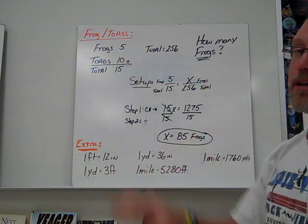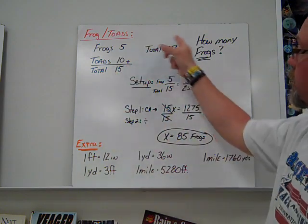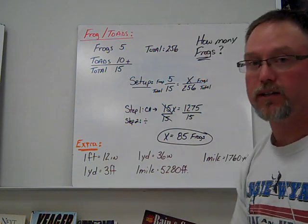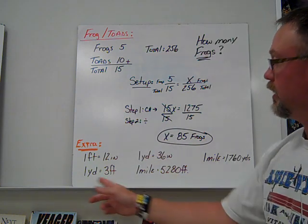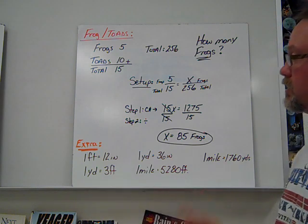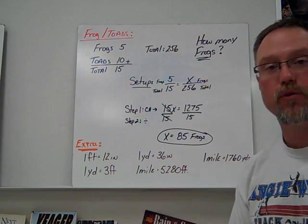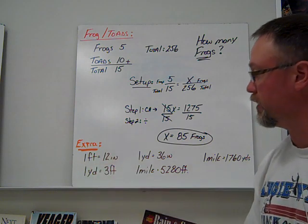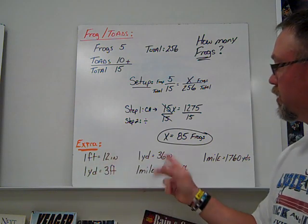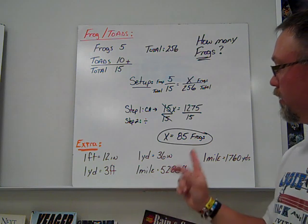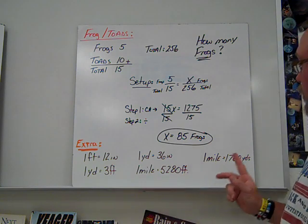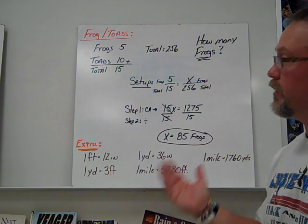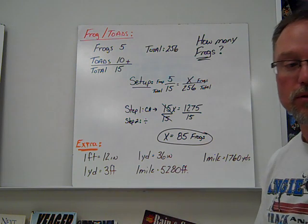These will take you a little bit. It's just making sure you read the question carefully, and if they say a total number of what you're looking for, that's when you work the total fractions. At the bottom, I'm giving you some extra things for your notes: 1 foot equals 12 inches, 1 yard equals 3 feet, 1 yard equals 36 inches, 1 mile equals 5,280 feet, 1 mile equals 1,760 yards. That's the first section of Chapter 6 with ratios.